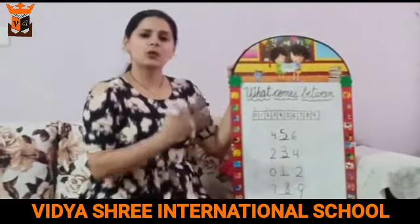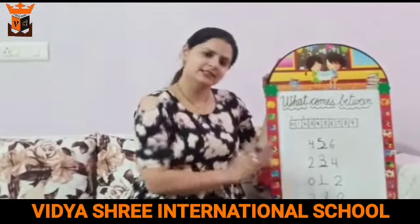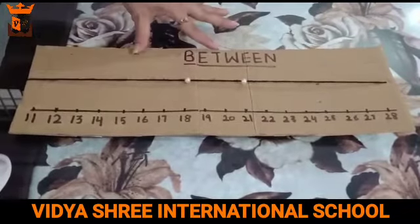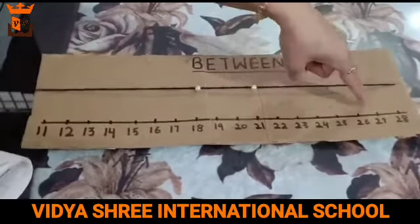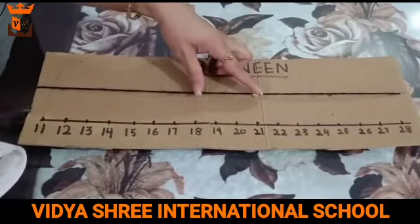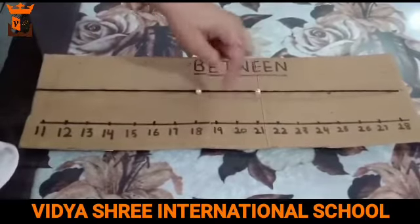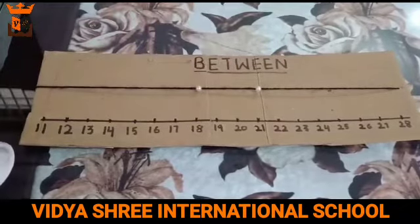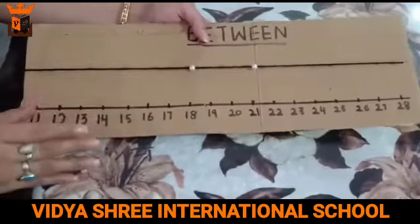Now that we have done this concept, let's do an activity related to the same. Are you all ready for that? Let's start the activity for what comes between. Here I have taken a cardboard and written numbers from 11 to 28. There is a thread and I have placed two beads on it.